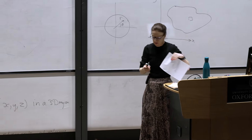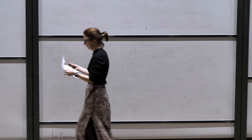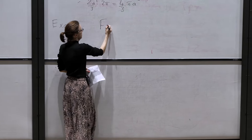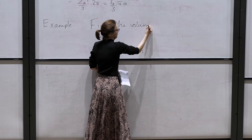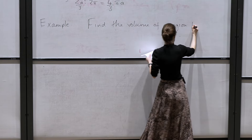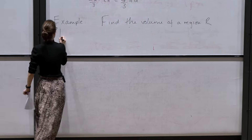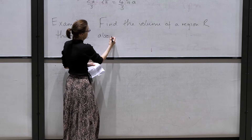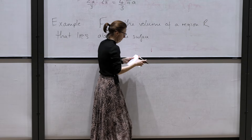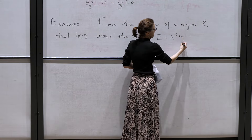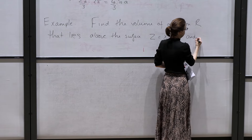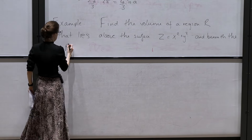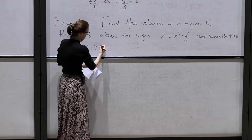Now suppose we want to find the volume of a more complicated integral. As an example: find the volume of a region R that lies above the surface given by z equals x² + y², and beneath the plane x + y + z equals 1.